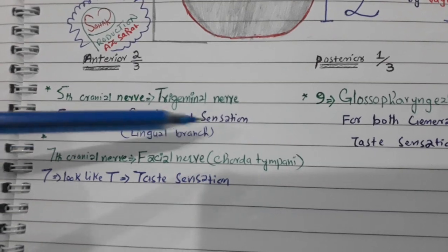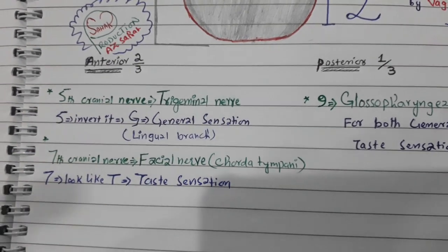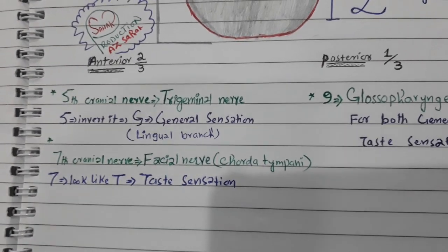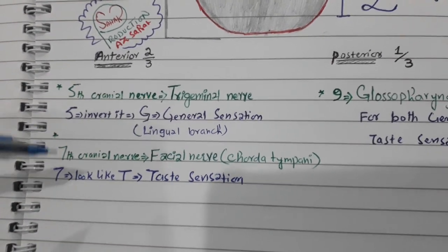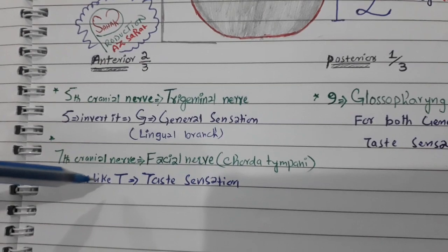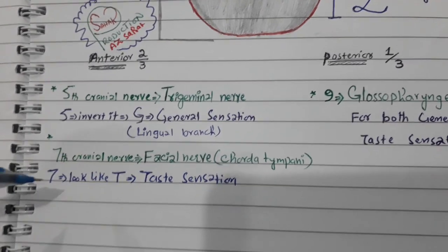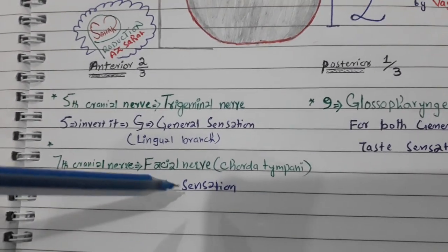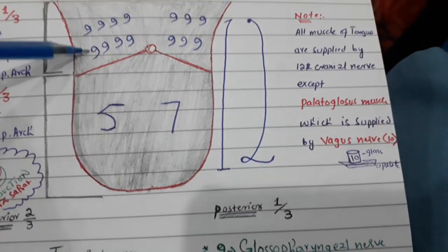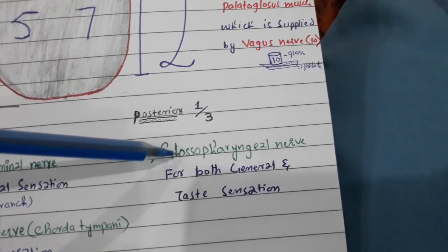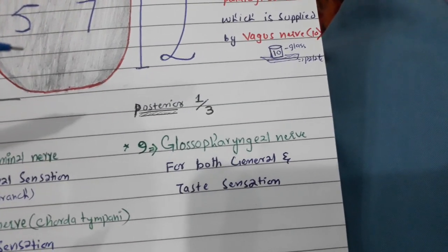The seventh cranial nerve is the facial nerve, and its relevant branch is the chorda tympani. The number seven somehow looks like the letter 'T,' which means the seventh cranial nerve is for taste sensation. The posterior one-third is supplied by the ninth cranial nerve, which is the glossopharyngeal nerve.